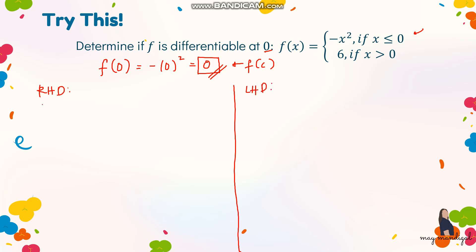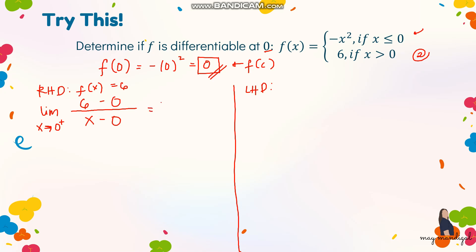For the right hand derivative, we take the limit as x approaches 0 from the right. Since we want the value from the right (greater than 0), we use the second sub-function: f of x equals 6. Substituting: limit of 6 minus 0 all over x minus 0, which simplifies to limit of 6 over x as x approaches 0 from the right. Substituting gives 6 over 0, which is undefined.